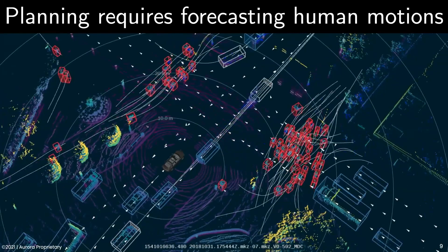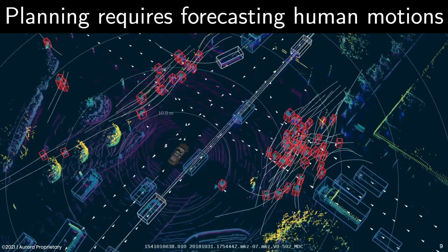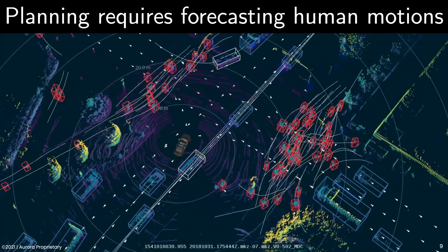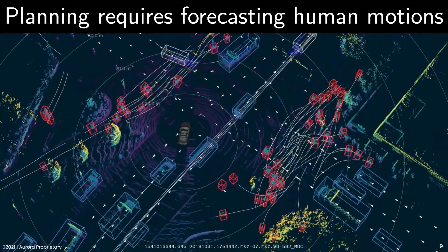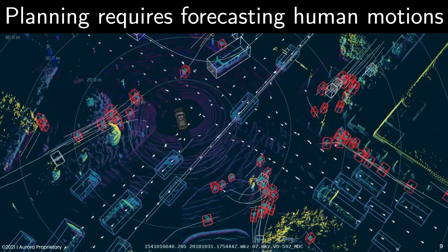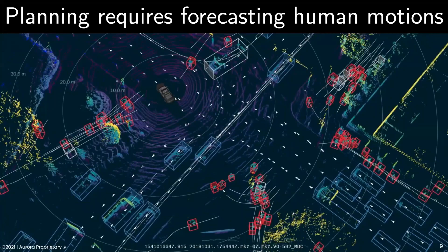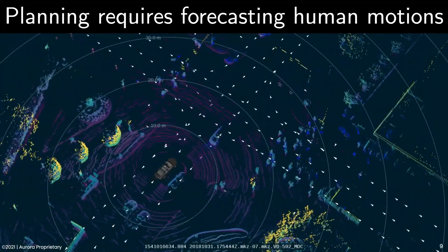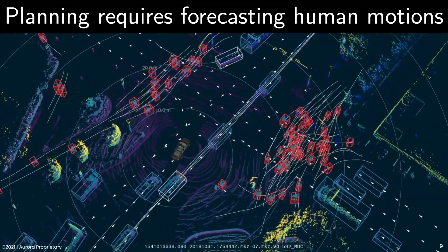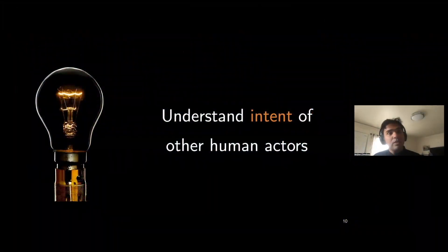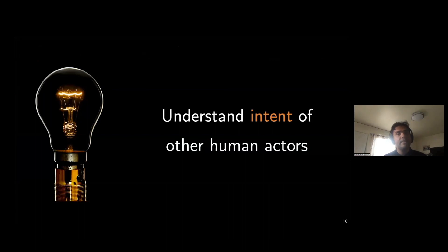Robots are not alone on the road. Take a look at a busy unprotected left full of pedestrians and cars. If the robot simply viewed these actors as dynamic obstacles, it'll never make this turn — it has to actively create an opening by predicting how other actors will respond to its actions. The robot has to understand the latent intents of other human actors and communicate its own intent to plan a safe path to the goal.